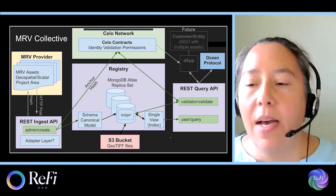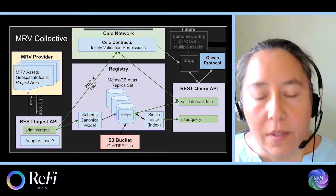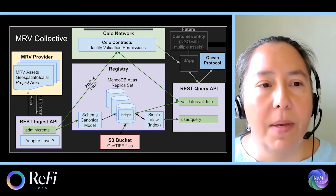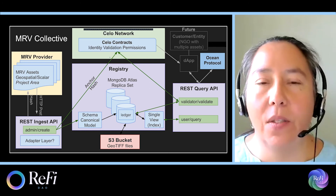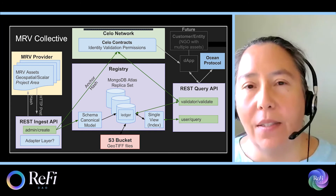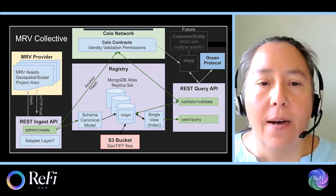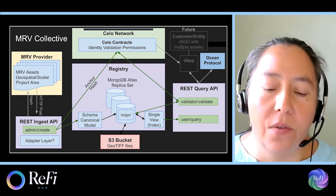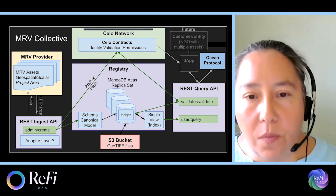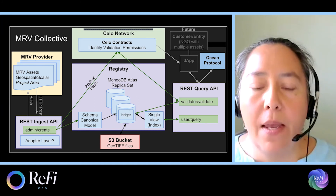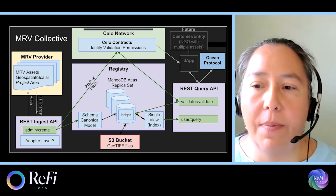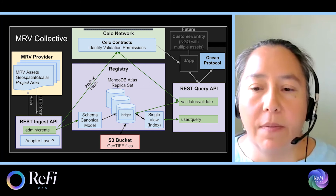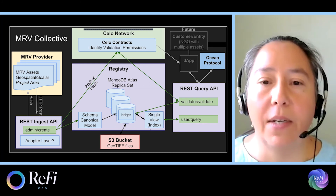For the MRV Collective, we initially built this for Declimate and are now extending it. The MRV provider has different MRV assets — geospatial or scalar — and they post data to our ingestion API. At that point, we generate a hash of the data, which gets stored to the Celo network, though it's blockchain agnostic and could be placed on any contract. For Declimate, we built it for Juno using CosmWasm. The hash also gets stored in a MongoDB registry ledger, larger files go to an S3 bucket, and we have a REST query API where people can validate and query data using MongoDB's single-view functionality.